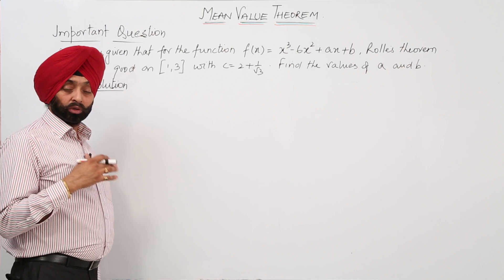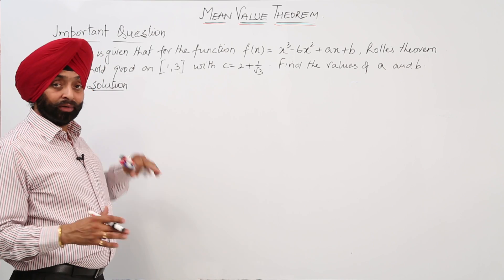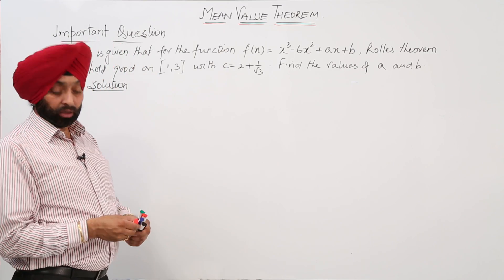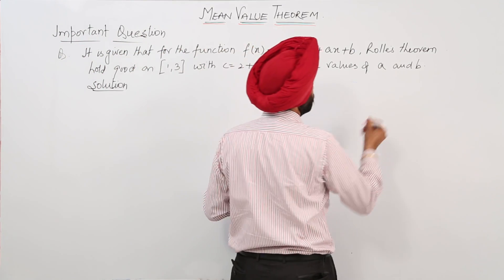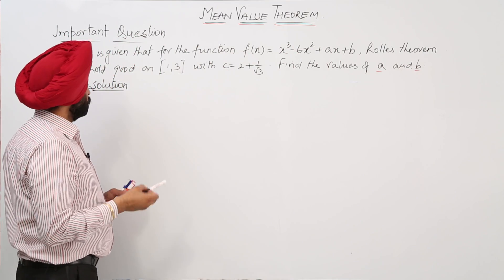So again, Rolle's theorem is already verified for the given interval [1, 3] with the value of c = 2 + 1/√3. Now what we have to do, again we have to find values for a and b.